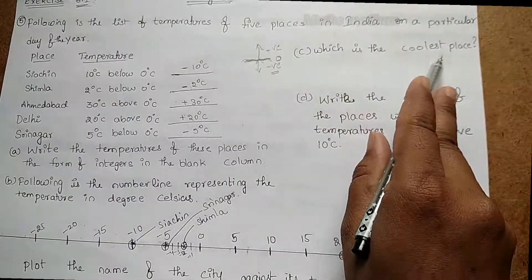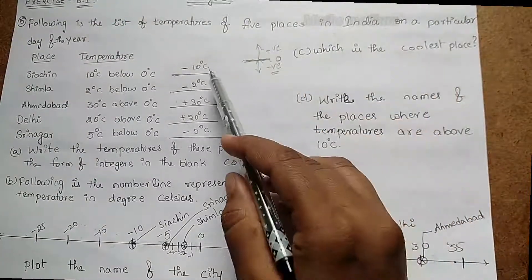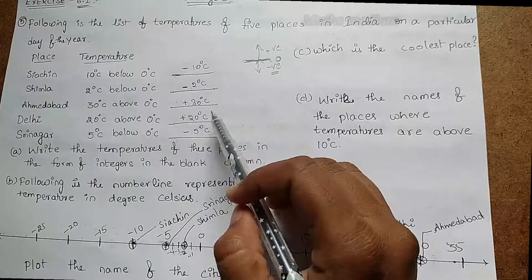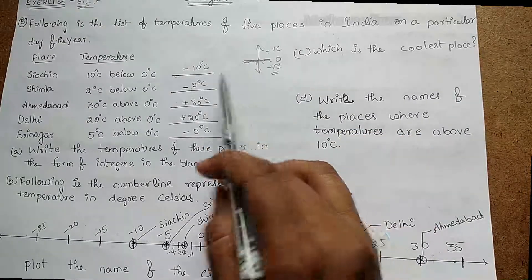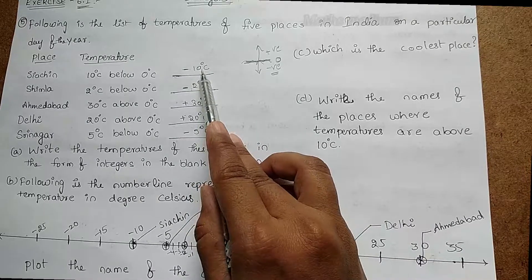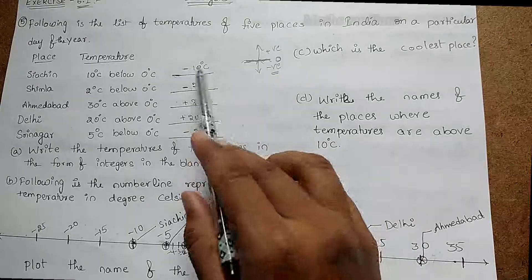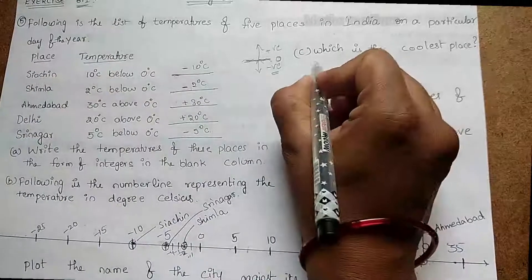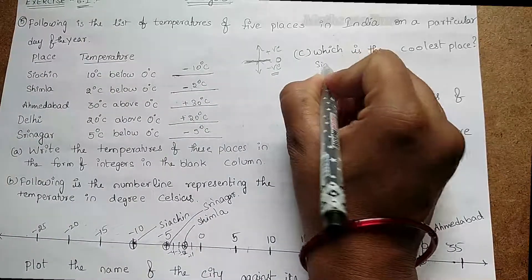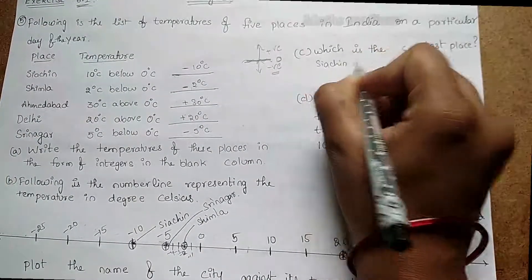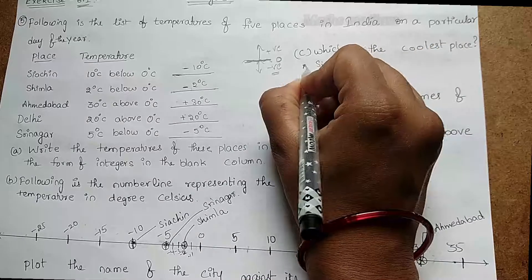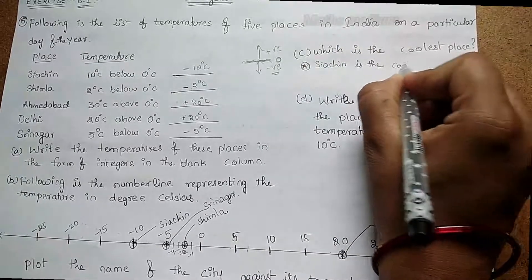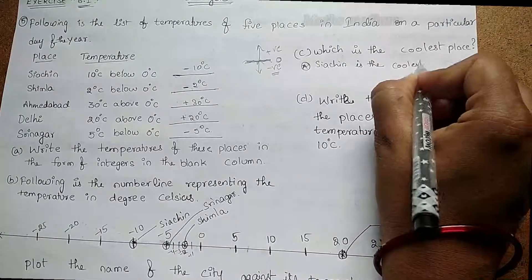Next question: which is the coolest place? By observing the number line, the most coolest place has the smallest (lowest) temperature. Here, −10°C is the smallest number, so the coolest place is Siachen, with −10 degrees Celsius.